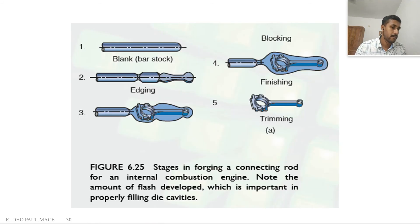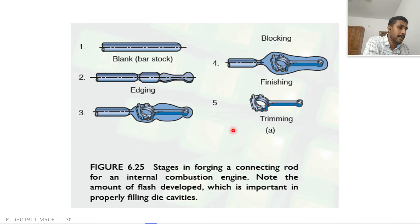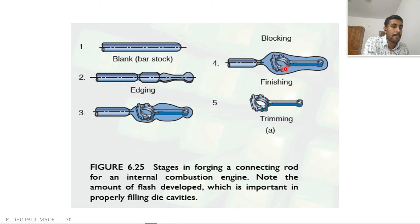This is the overall view: the edging process forms specific areas, the fullering operation distributes material, blocking or swagging gives the approximate shape, and then finishing and trimming operations complete the product.